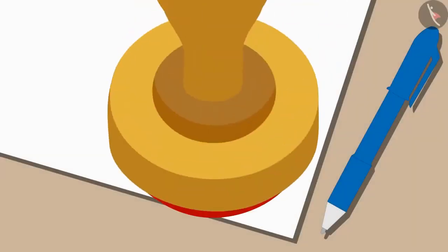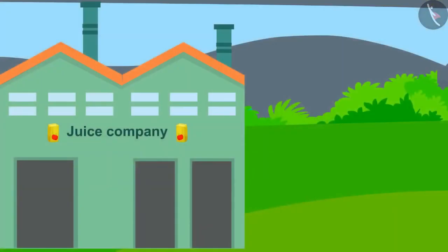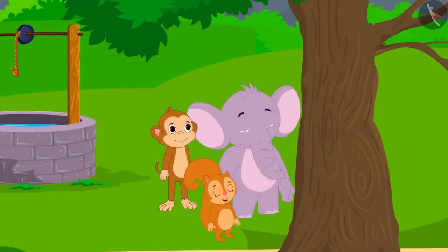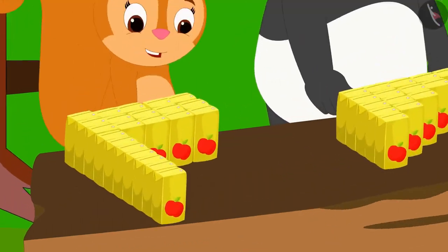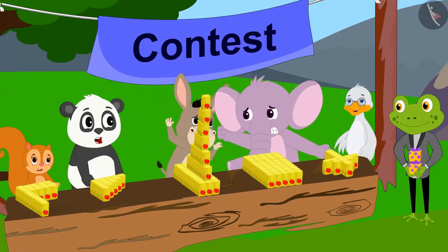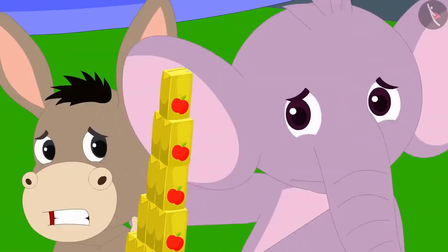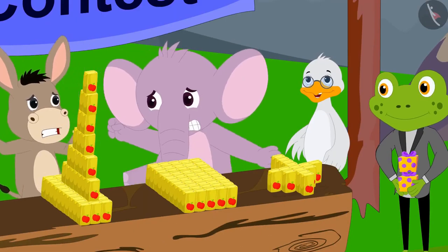In this video, we will see some of the misconceptions related to volume. A new company started production of juice in Champapur and advertised a competition: whoever makes a shape using juice cartons with the highest volume will win a prize. All the villagers made different shapes. But there is a fight between Appu and Bhola — Tarru the Frog has declared both as winners.